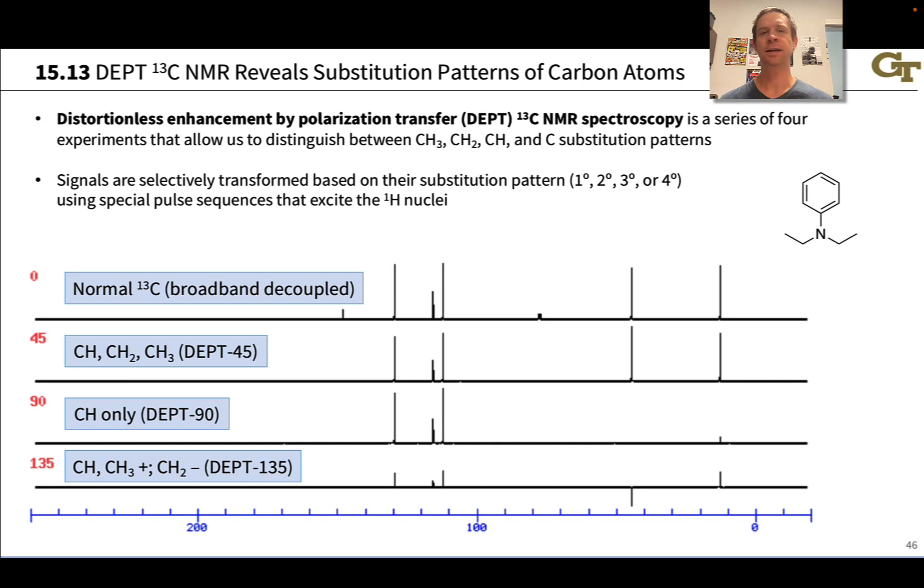DEPT carbon NMR spectroscopy is a technique used to determine the numbers of hydrogens connected to each carbon or each carbon within a chemically equivalent set. DEPT is a series of multiple spectra where the carbon-13 NMR spectrum is transformed based in a special way on the number of hydrogens connected to that carbon, taking advantage of the fact that the proton nucleus in hydrogen is an NMR active nucleus as well.